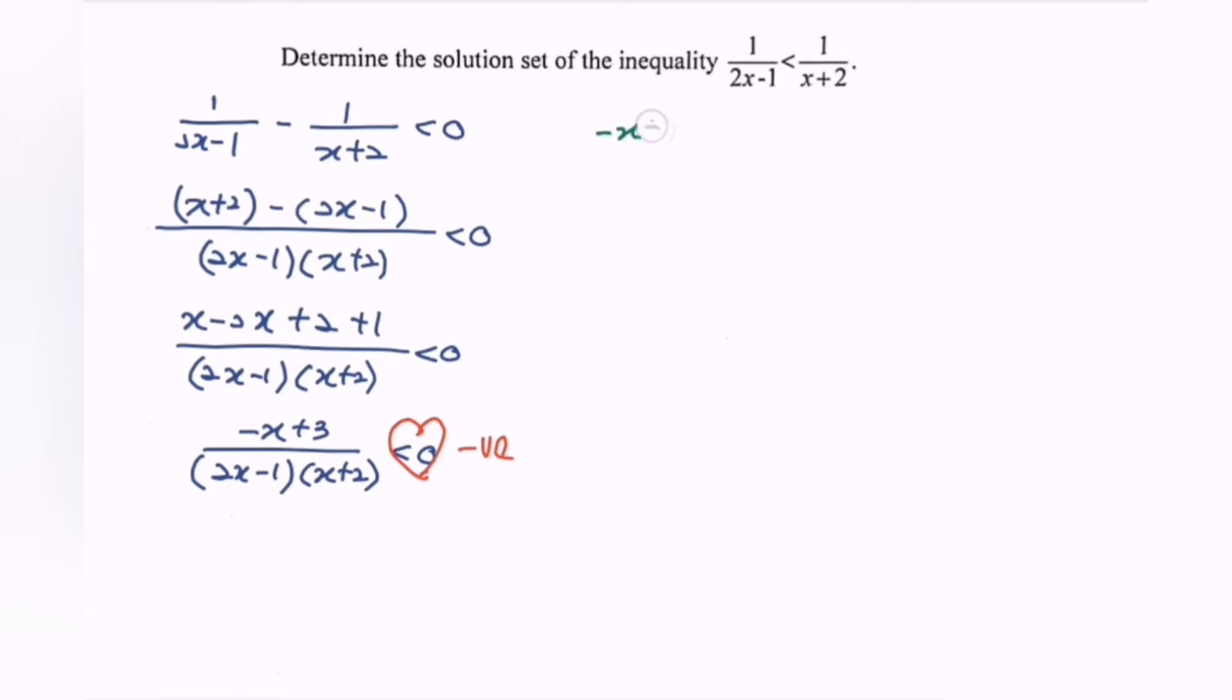So do remember, always positive. We have to assume always positive. Next we have x less than 3, x greater than 1 over 2, x greater than negative 2.